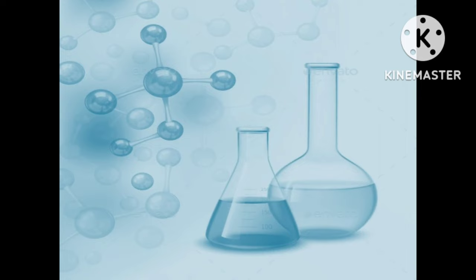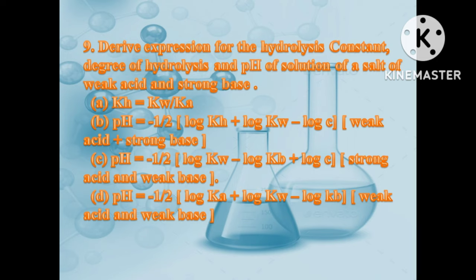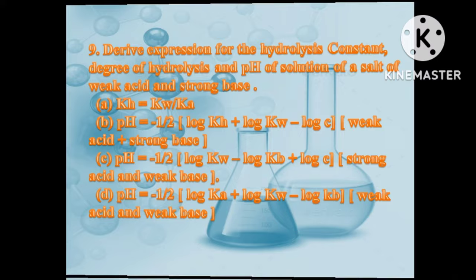Question number 9: Derive Henderson equation for the hydrolysis constant, degree of hydrolysis and pH of a solution of a salt. Or prove that: for weak acid and strong base, pH = -1/2(log Kh + log Kw - log c); for strong acid and weak base, pH = -1/2(log Kw - log Kb + log c); and for weak acid and weak base, pH = -1/2(log Ka + log Kw - log Kb).